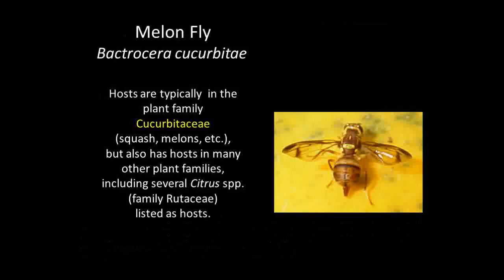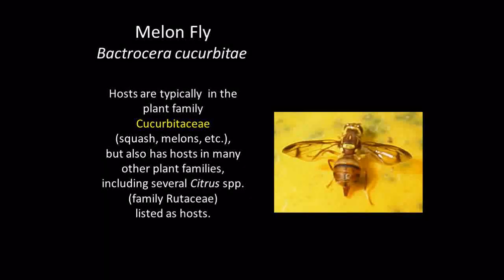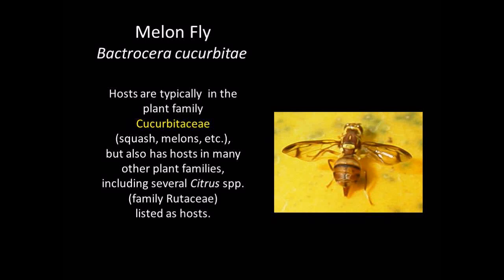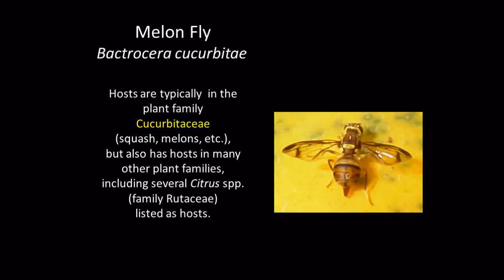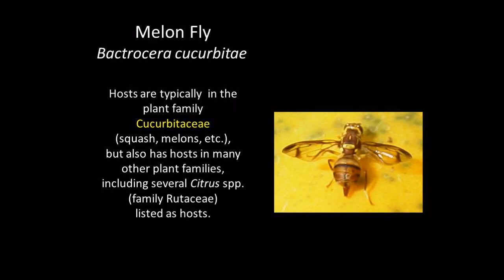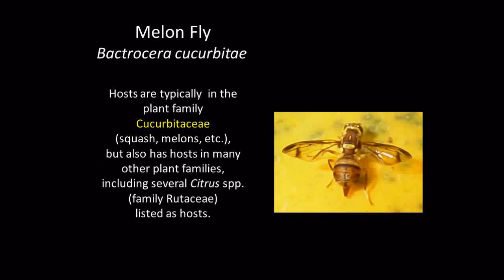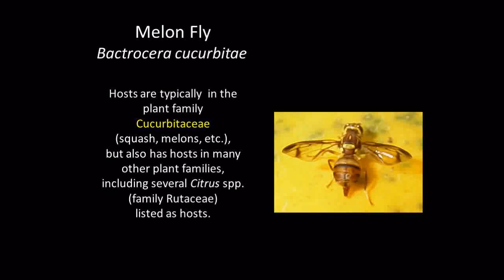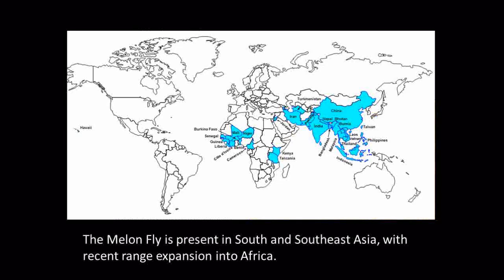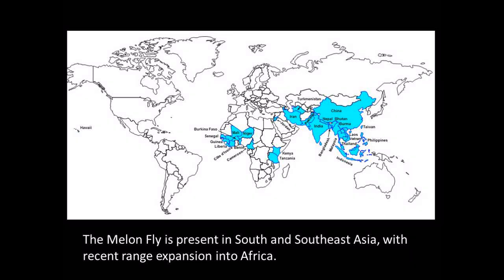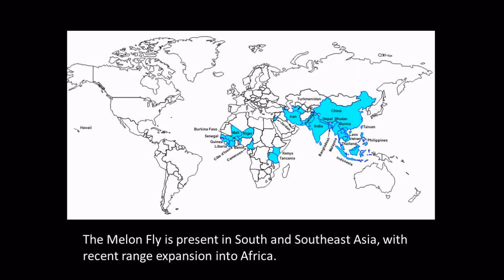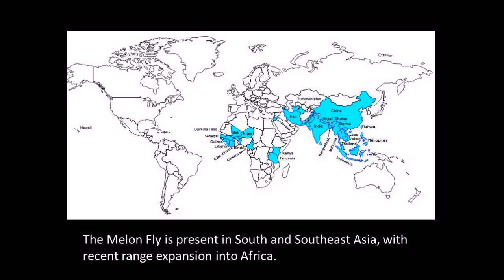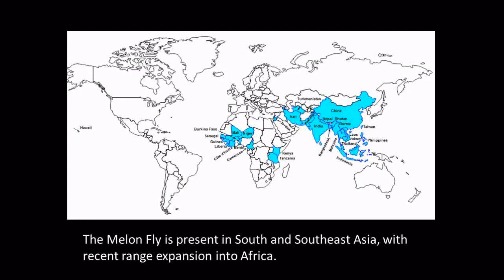Many of the host fruits of the melon fly are in the plant family Cucurbitaceae, which includes plants such as squashes and melons, but melon fly also has hosts in many other plant families. Several citrus species, family Rutaceae, have been listed as melon fly hosts. Melon fly is also present in South and Southeast Asia, and has extended its range to Hawaii and to the African continent, including many countries in West Africa, as well as Kenya and Tanzania in East Africa.